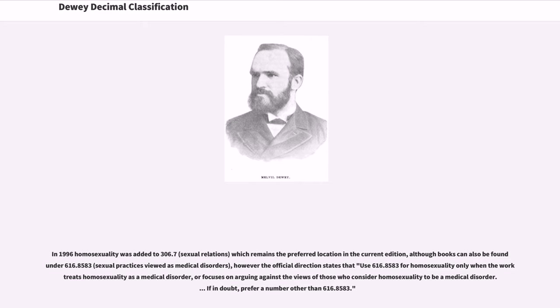In 1932, topics relating to homosexuality were first added to the system under 132, mental derangements, and 159.9, abnormal psychology. In 1952, homosexuality was also included under 301.424, the study of sexes in society. In 1989 it was added to 363.49, social problems, a classification that continues in the current edition. In 1996, homosexuality was added to 306.7, sexual relations, which remains the preferred location in the current edition, although books can also be found under 616.8583, sexual practices viewed as medical disorders. However, the official direction states that 616.8583 should be used for homosexuality only when the work treats homosexuality as a medical disorder, or focuses on arguing against the views of those who consider homosexuality to be a medical disorder. If in doubt, prefer a number other than 616.8583.